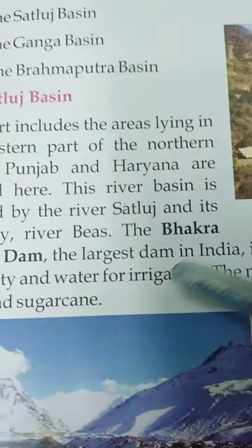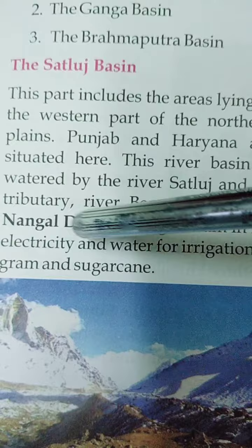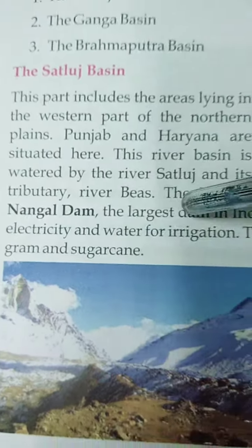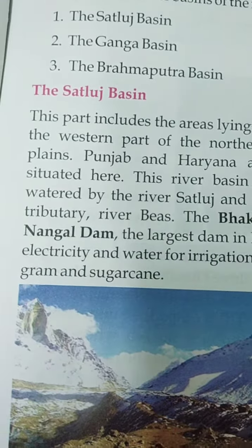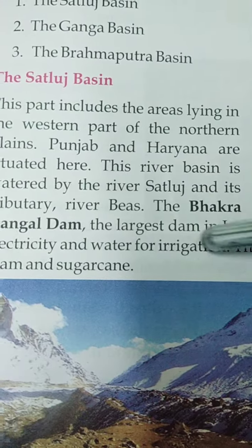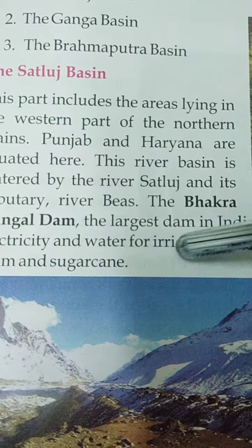The river basin is watered by the river Satluj and its tributary river Bees. A tributary is a river coming out of the main river. So Bees is the river which comes out of the main river Satluj — Bees is the tributary of Satluj. You can see this in the picture: here is the Satluj river, and when it comes here it gets divided, and the name of this tributary is Bees.